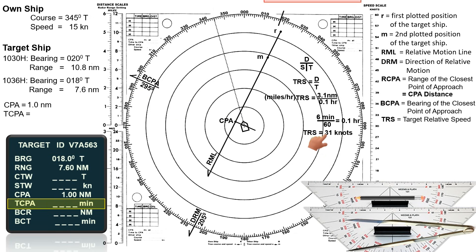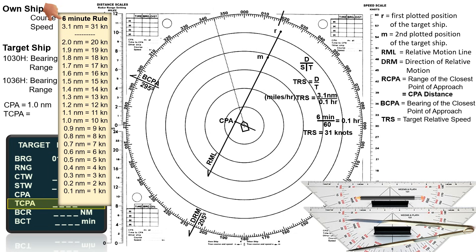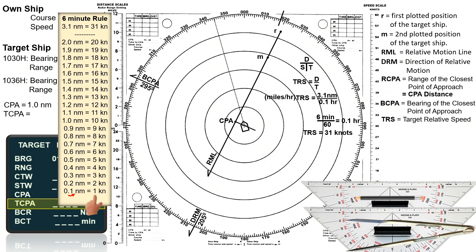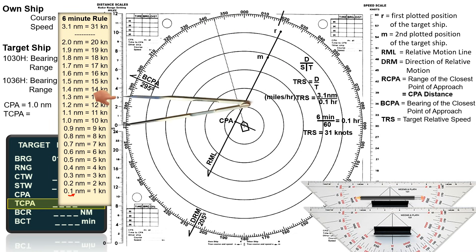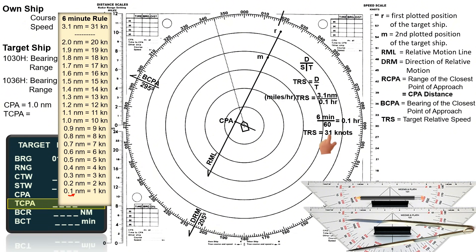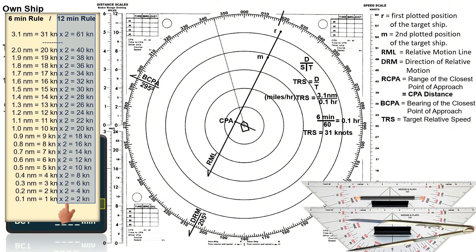However, we do not need to go through this process every time, as we are using the 6-minute rule. If the ship travels 0.5 nautical miles in 6 minutes, her speed is 5 knots. For 1.2 nautical miles, her speed is 12 knots. For 2.0 nautical miles, her speed is 20 knots. By simply moving the decimal point of the distance one place to the right, you can determine the vessel's speed for a 6-minute steaming time. In this case, the distance from R to M is 3.1 nautical miles, so the target's relative speed is 31 knots. For a 12-minute steaming time, simply multiply the 6-minute speed by 2.